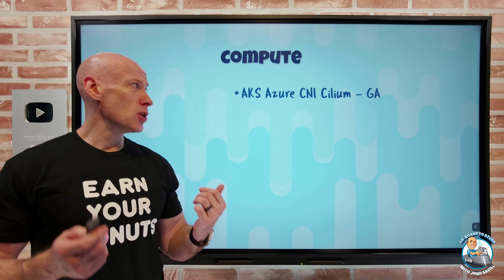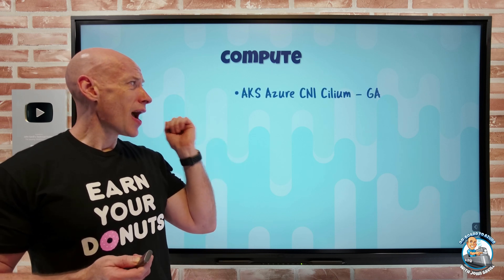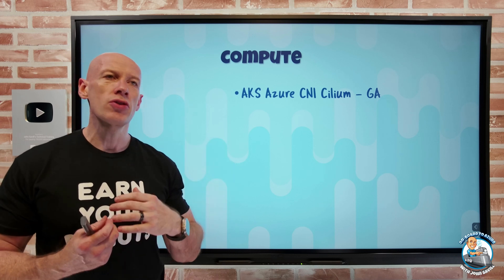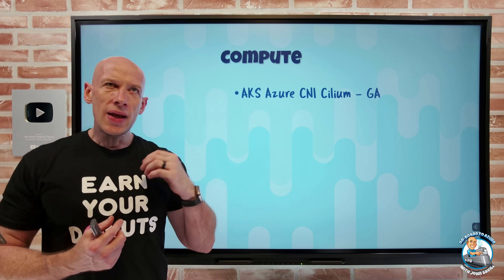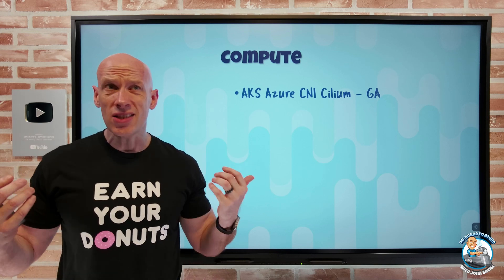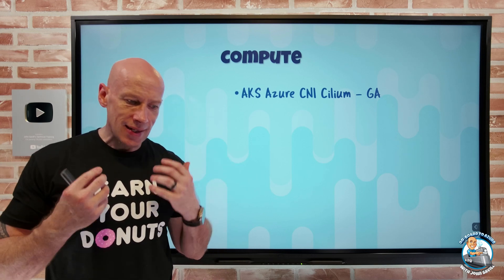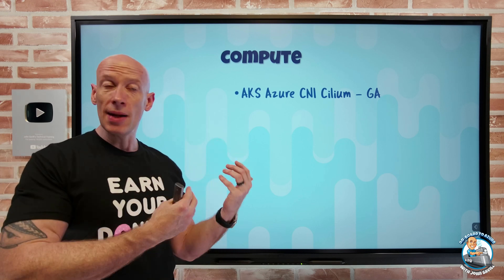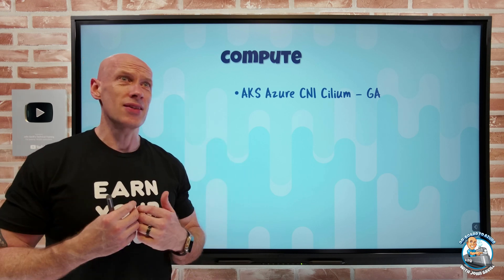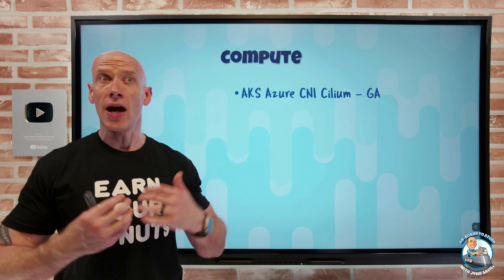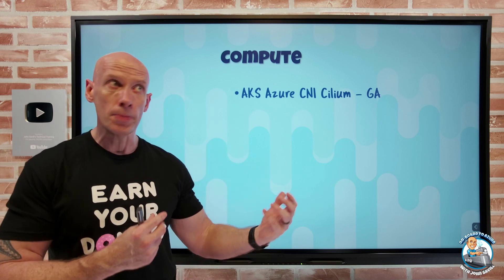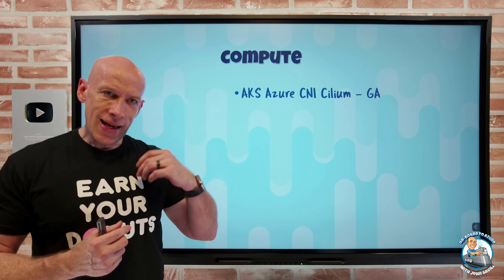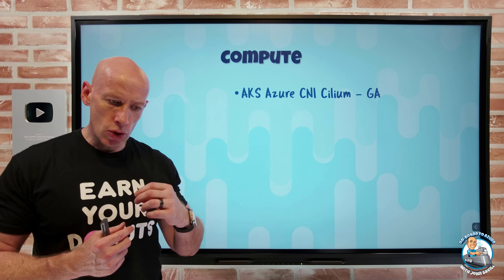On to what's new on the compute side. For Azure Kubernetes Service, the Azure CNI Cilium has now gone GA. By default, AKS doesn't come with a native container network interface. There are options available: Azure CNI, Kubenet, Azure CNI Overlay, or you can bring your own. The Azure CNI Cilium is a bring-your-own option, powered by the Cilium networking solution.